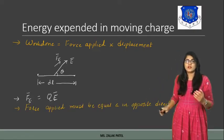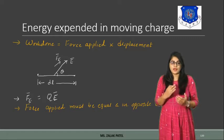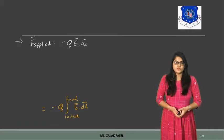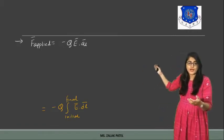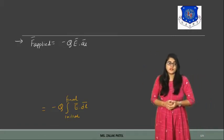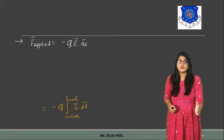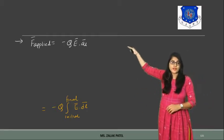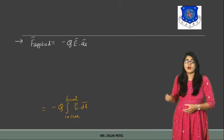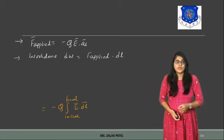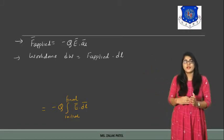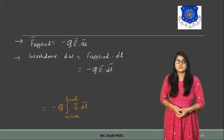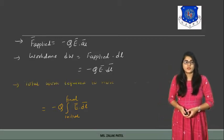The force applied must be equal and opposite to the direction of the electric force to denote work done. So the applied force is in the opposite direction. In the earlier equation we take plus QE, but since the force applied is in the opposite direction, we put a negative sign: minus QE·AR. Work done equals force applied times displacement, so it becomes minus QE·DL, where DL denotes the displacement.